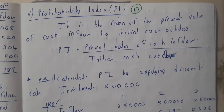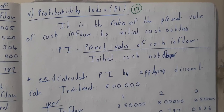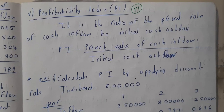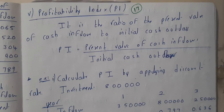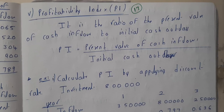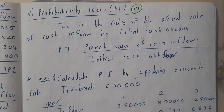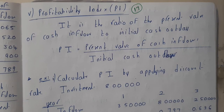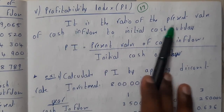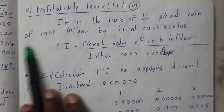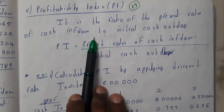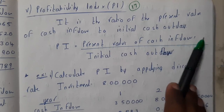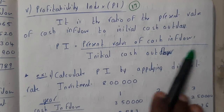Hello guys, we are back with our next lecture. In this lecture, let us go through Profitability Index. We will be deciding the index or the value which indicates profit — basically, it is the ratio of the present value of cash inflows to the initial cash outflow.